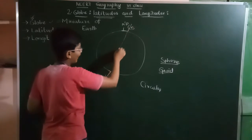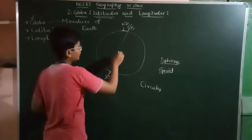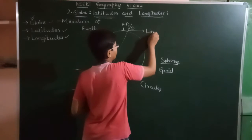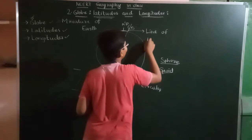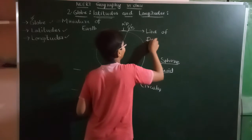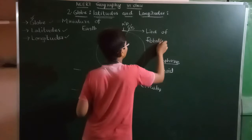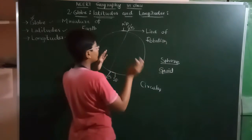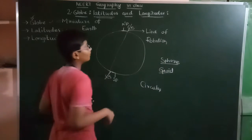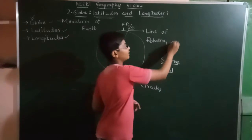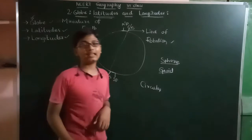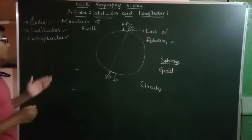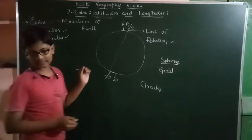This is the axis, which is also called the line of rotation — axis of rotation or line of rotation. It is called so because the Earth rotates on this line. Remember, this line of rotation is an imaginary line. This is the line of rotation.